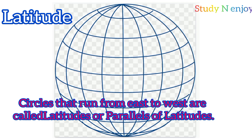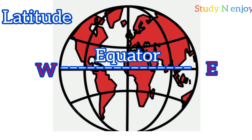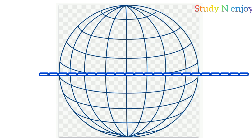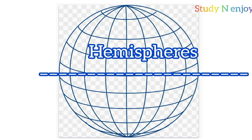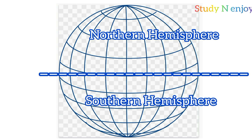Latitudes are imaginary circles running from east to west on a globe. These lines are parallel to each other. One such imaginary line of latitude is the equator — the most important and the longest parallel of latitude. All the other latitudes are numbered from the equator. The equator divides the earth into two equal halves known as hemispheres. The northern part above the equator is called the northern hemisphere and the southern part below is called the southern hemisphere.